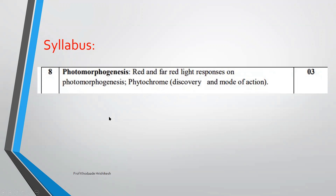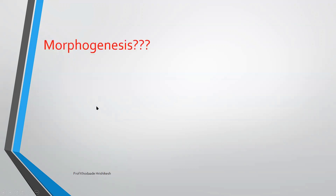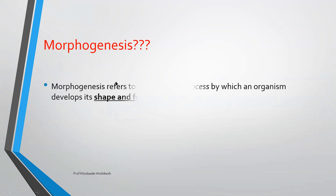One lecture will be sufficient to understand at graduation level. First of all, what do you mean by morphogenesis? Because it comes under photomorphogenesis, you have to understand what morphogenesis is. Morphogenesis refers to the biological process where an organism develops shapes and forms. Shapes and forms developed by organisms come under morphogenesis.